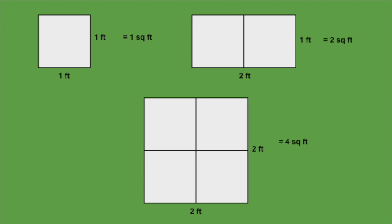Now I want you to imagine that there are two of these squares side by side. That would be two square feet, right? But think about it for a second. That new larger shape would measure two feet on one side, but only one foot on the other.